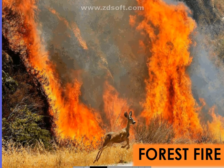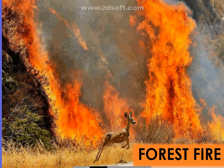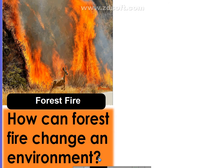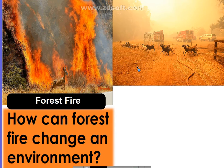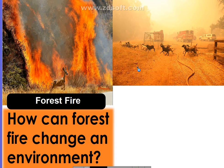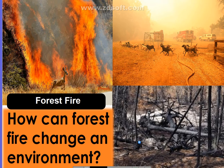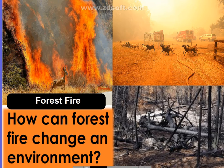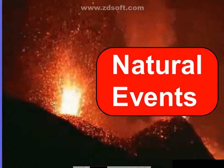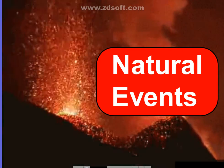Another example we have here is forest fire. How can forest fire change an environment? Some animals move to safer places or may die during a forest fire. Forest fire can burn trees and plants that serve as home for plants and animals in the forest. Let's try to learn other natural events that can cause environments to change.